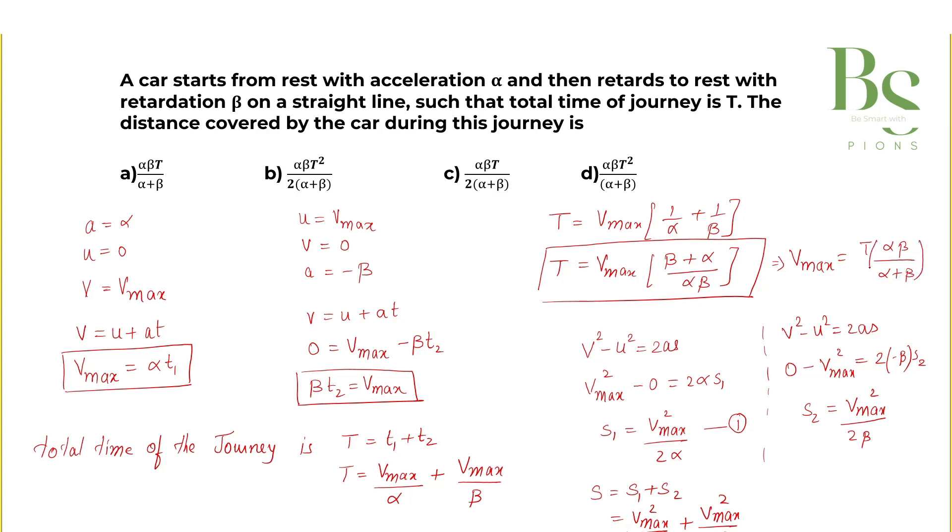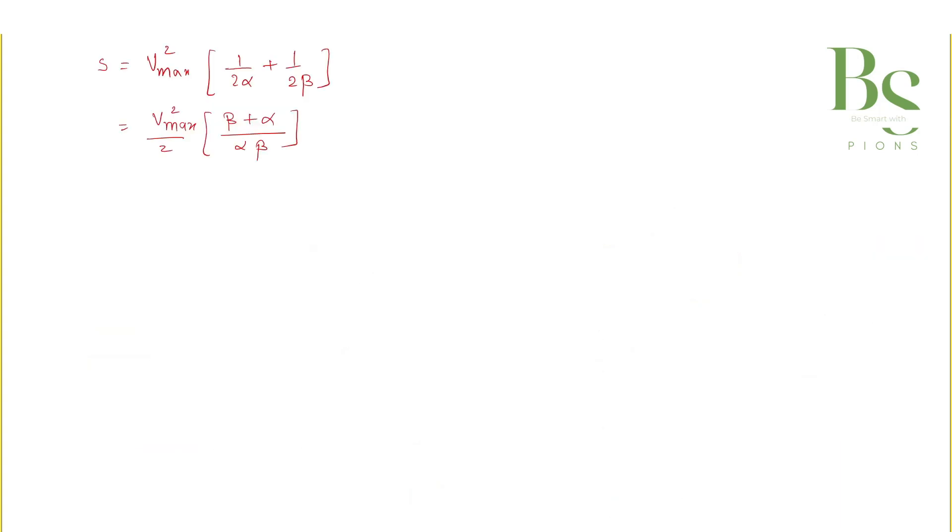This gives us V_max is time T into alpha beta upon alpha plus beta. Let's substitute it. So this is time T into alpha beta divided by alpha plus beta whole squared multiplied with beta plus alpha upon alpha beta. So if it's a whole square, one of them will cancel out and we left with half T squared, alpha beta, one of them cancels out, left with alpha beta upon alpha plus beta. So this is our maximum distance traveled by that object.